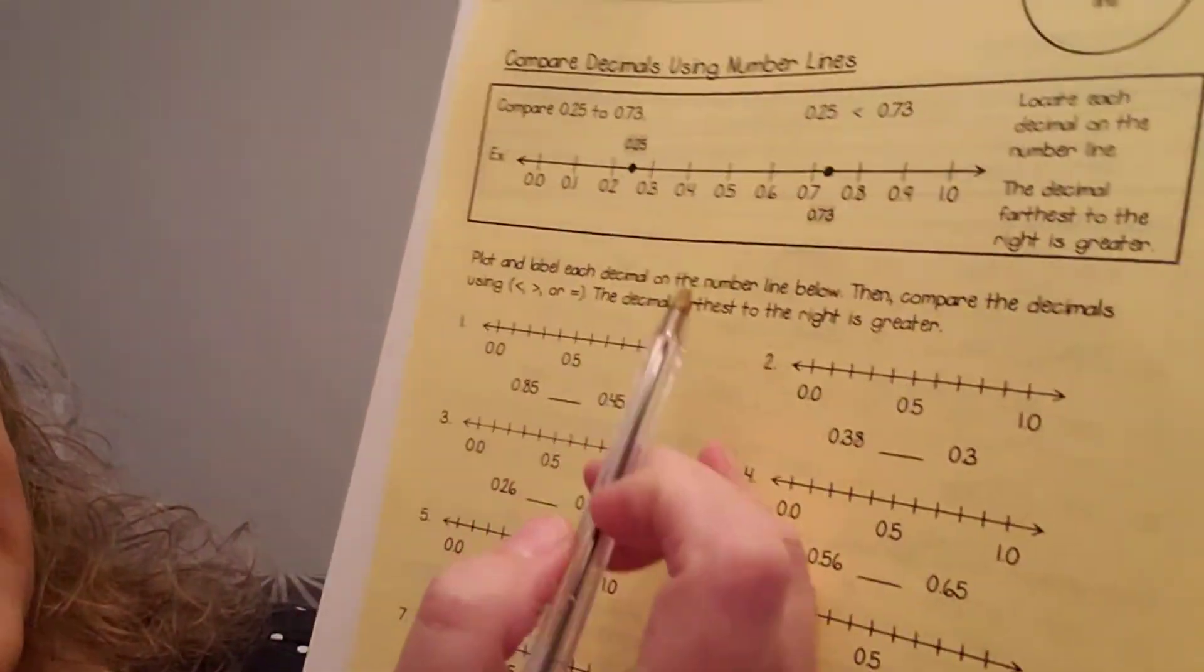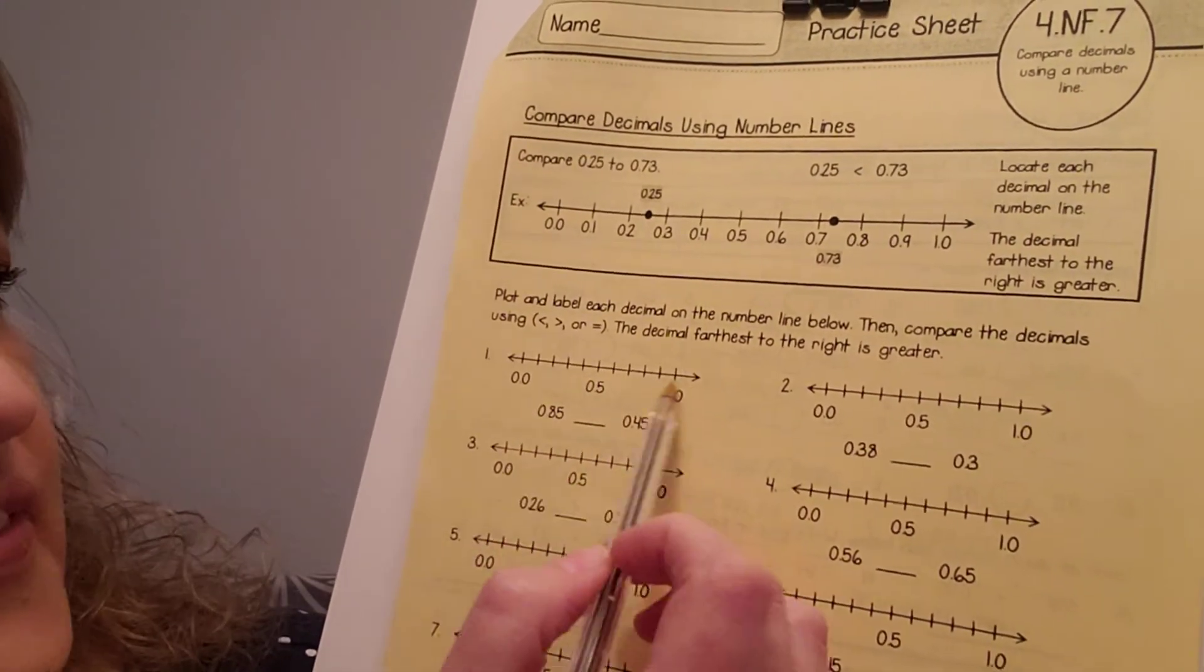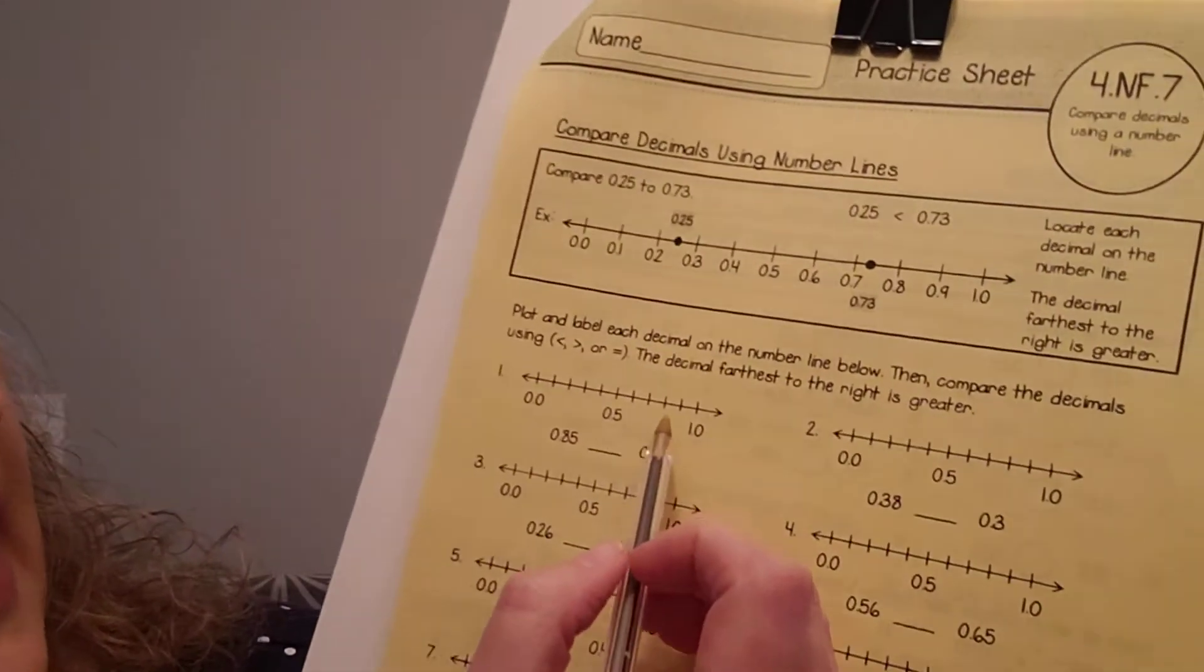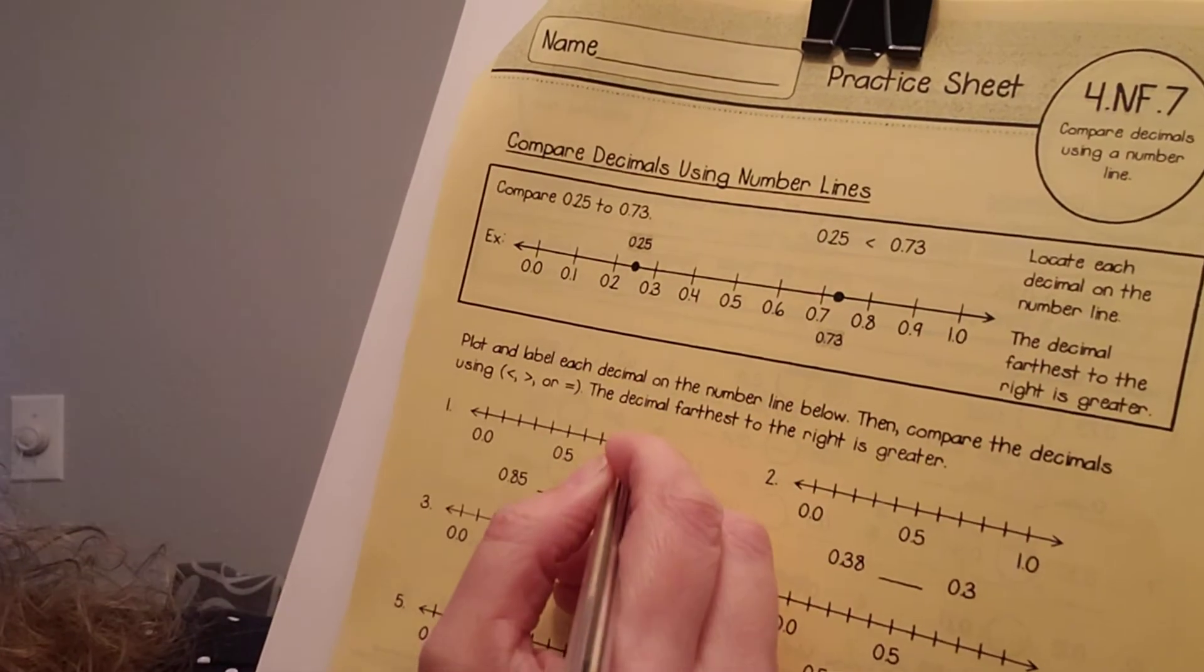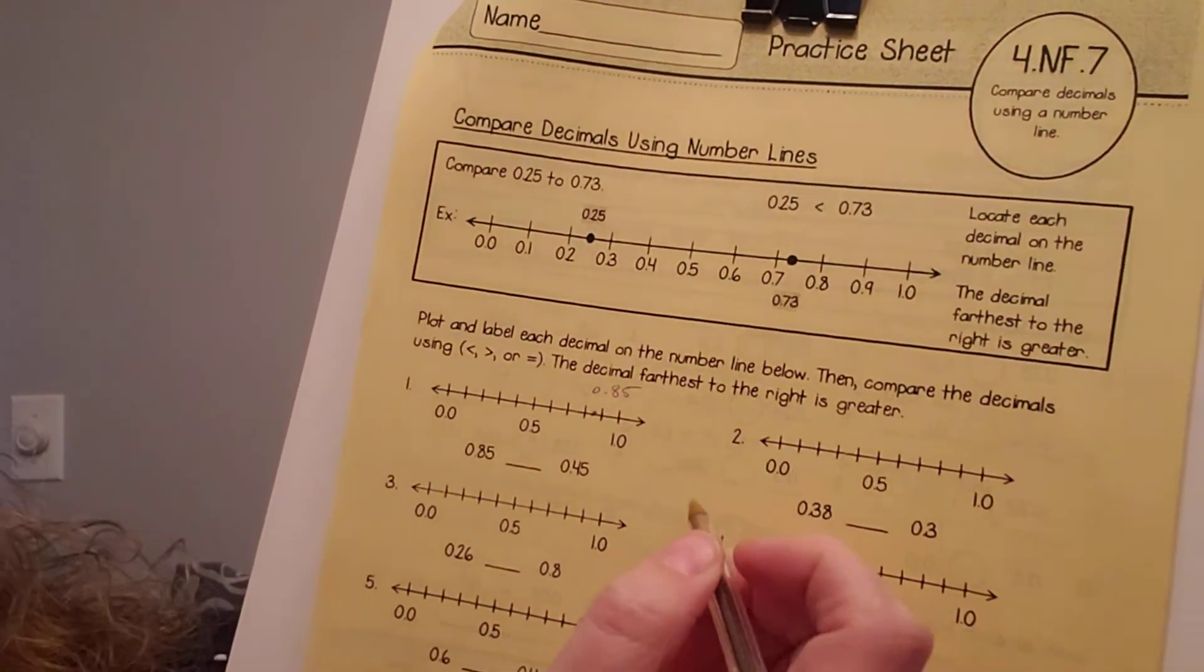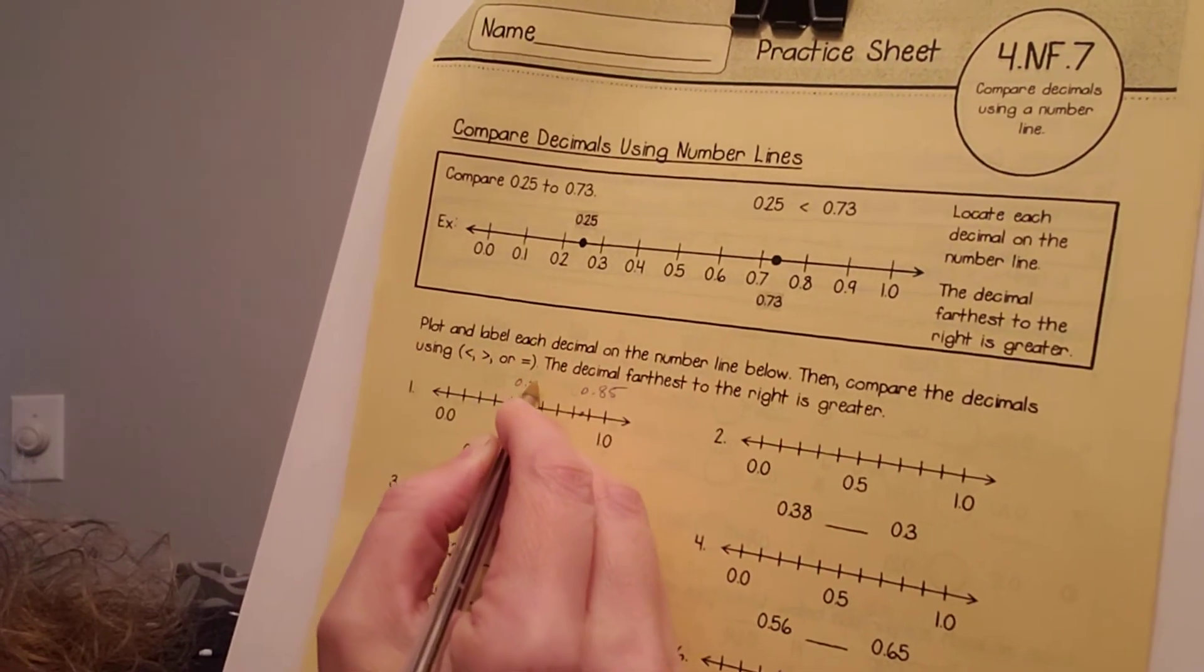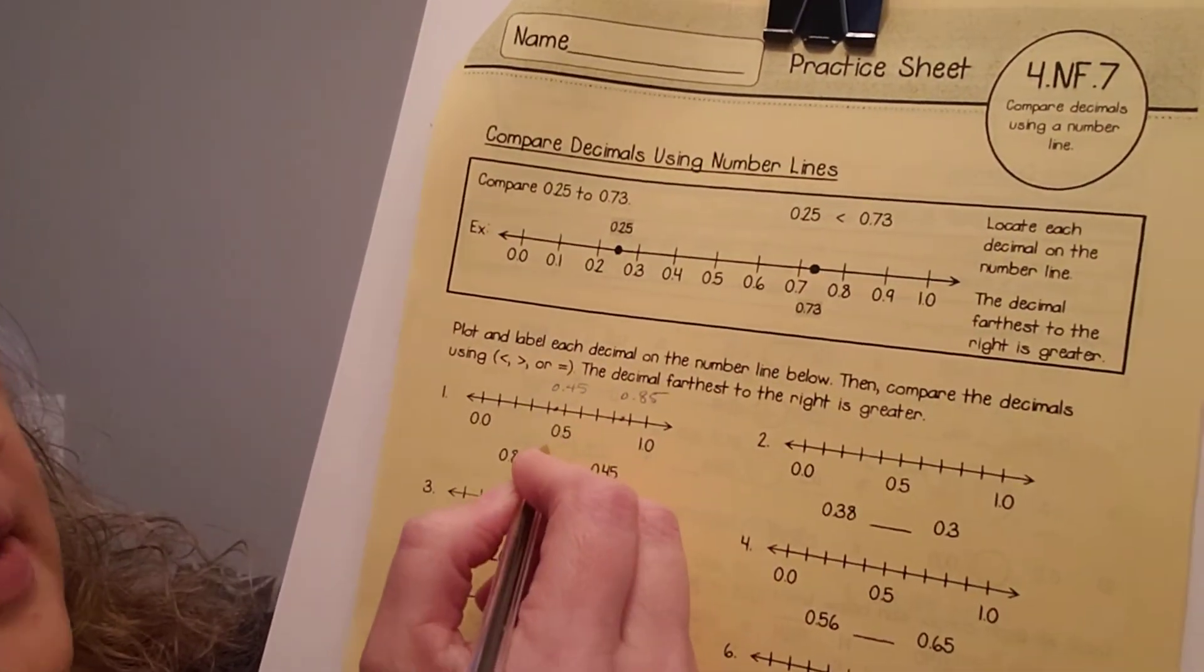And again, on this page, you're going to put the numbers on the number line, and then you're going to see which one is larger. So, I'm looking for 85 hundredths, which is the same as, here's 50, 60, 70, 80. 85 would be right there. And this one is 45. So, that would be 10, 20, 30, 40, 5, would be right there. So, which one is larger? Well, the 85. So, I'm going to put that there.